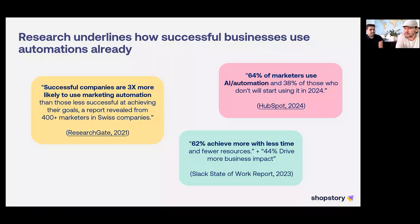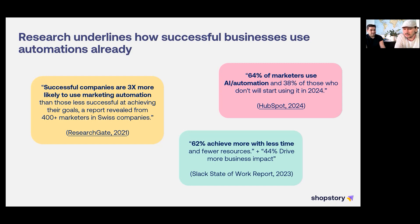Research also underlines this. There are dozens of studies — we can share more after the webinar — but the key takeaway is that most successful and biggest e-commerce businesses already use automation. Automation makes those big businesses even more successful and more efficient, because especially large players always struggle with efficiency the bigger they get.